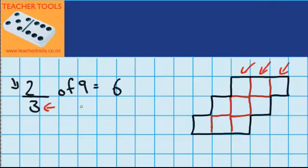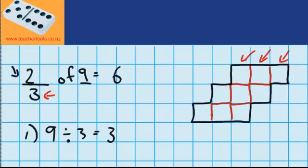So we've actually done this question in two steps. Our first step we tried to work out how many squares are in 1 third. And we did that by taking the 9 squares and sharing them into 3 parts or thirds. And 9 shared between 3 is 3.